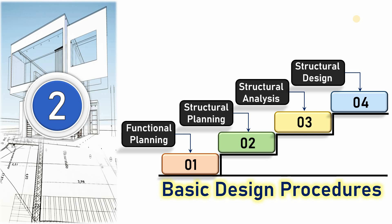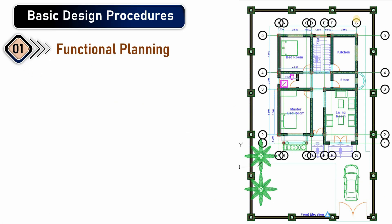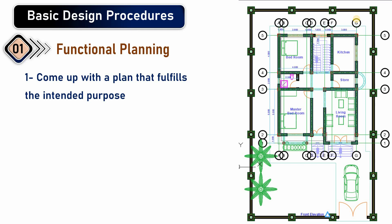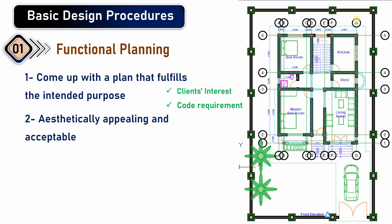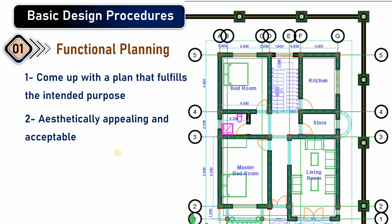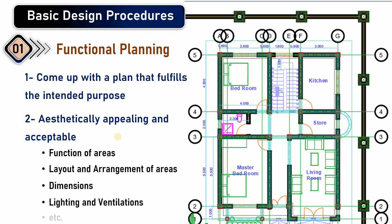In functional planning, this is essentially the architectural design of the building. It consists of coming up with a plan that satisfies the intended purpose. You need to consider the client's interests and the code provisions and requirements. The architect must come up with a design that is aesthetically appealing and acceptable.